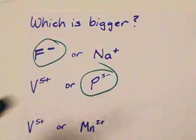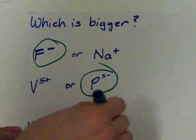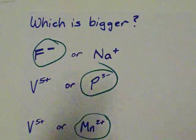Manganese straight up has more electrons, so it's the bigger atom slash ion here.